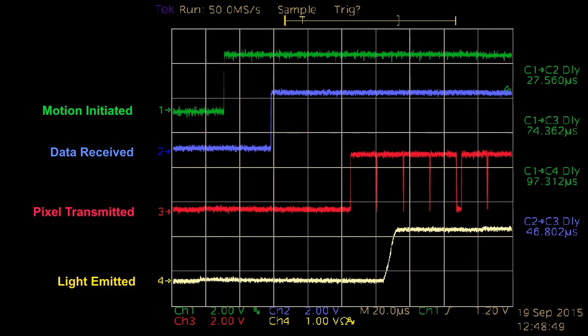Zero crossing detection by the shaft encoder, receipt of tracking data by the display processor, transmission of pixel data, and detection of light by a light sensor circuit.